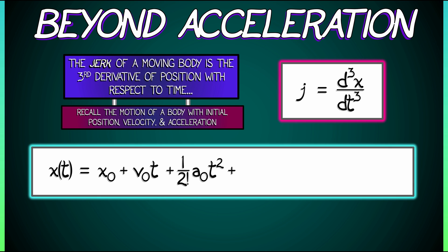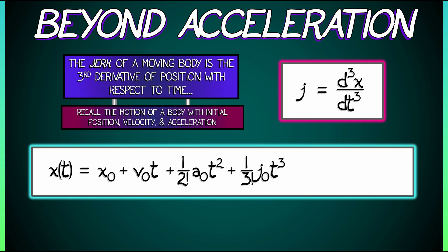Now, the next term in this series for position as a function of time, it's 1 over 3 factorial times the initial jerk, j naught times t cubed. Aha, well, there you go. But what follows that? What comes after jerk?